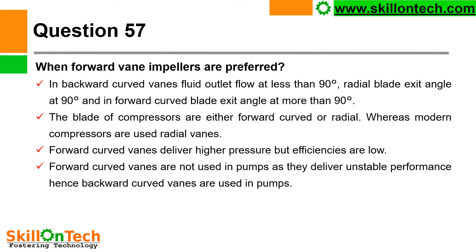Question 57: When are forward vane impellers preferred? In backward curved vanes, fluid exits at less than 90 degrees; radial blades exit at 90 degrees; and forward curved blades exit at more than 90 degrees. The blades of compressors are either forward curved or radial, while modern compressors use radial vanes. Forward curved vanes deliver high pressure but efficiencies are low. Forward curved vanes are not used in pumps as they deliver unstable performance; hence backward curved vanes are used in pumps.